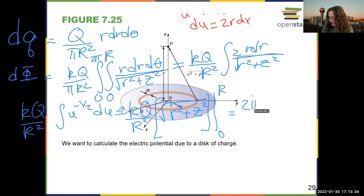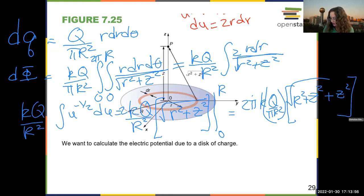And I get 2. And then here I'm going to put the pi back in 2 k q over pi r squared times r squared plus z squared square root minus z squared. And the reason I put that pi back in is that this is now the surface charge, sigma, which is how you'll find the answer written in a lot of resources, books and online and such.